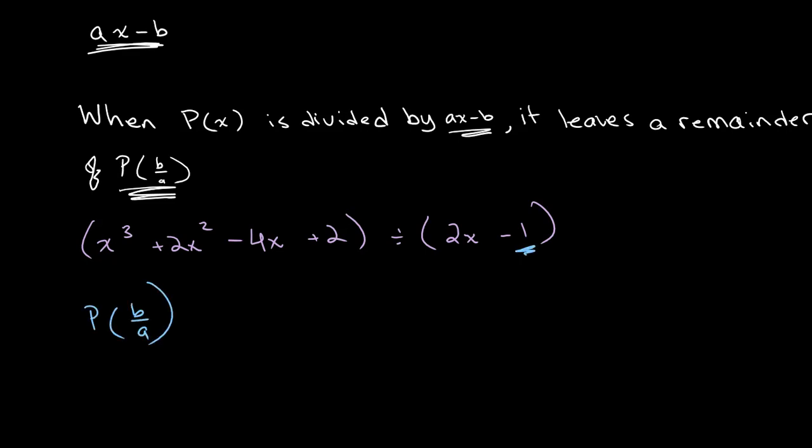So what we do is we simply find P(b/a). And in this case, b is equal to 1 and a is equal to 2. So we do P(1/2).